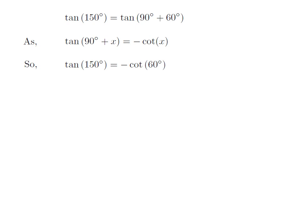Let us apply the above identity for tangent of 150 degree. Here x is 60 degree, so tangent of 150 degree is equal to minus cotangent of 60 degree.